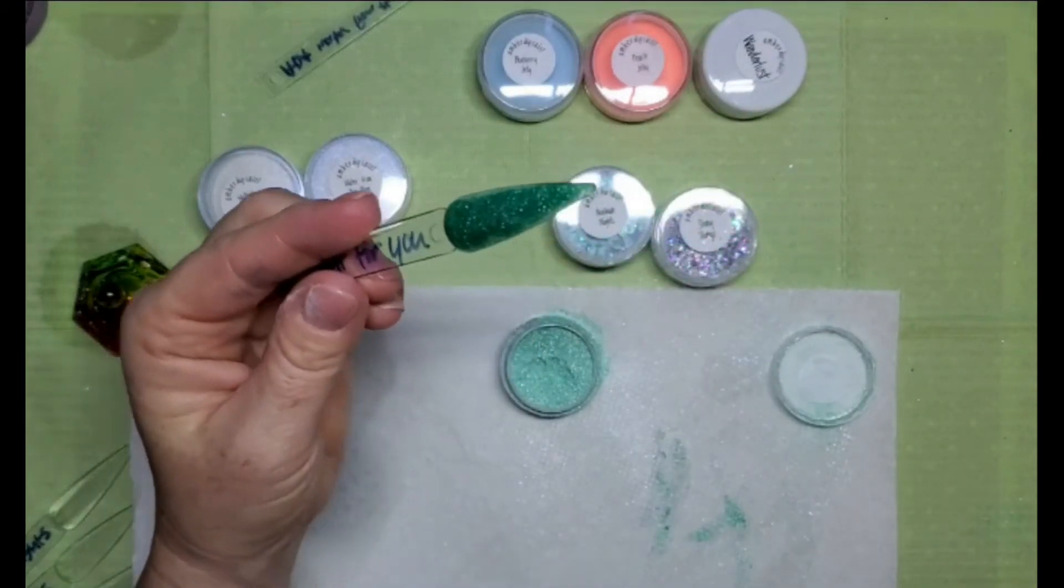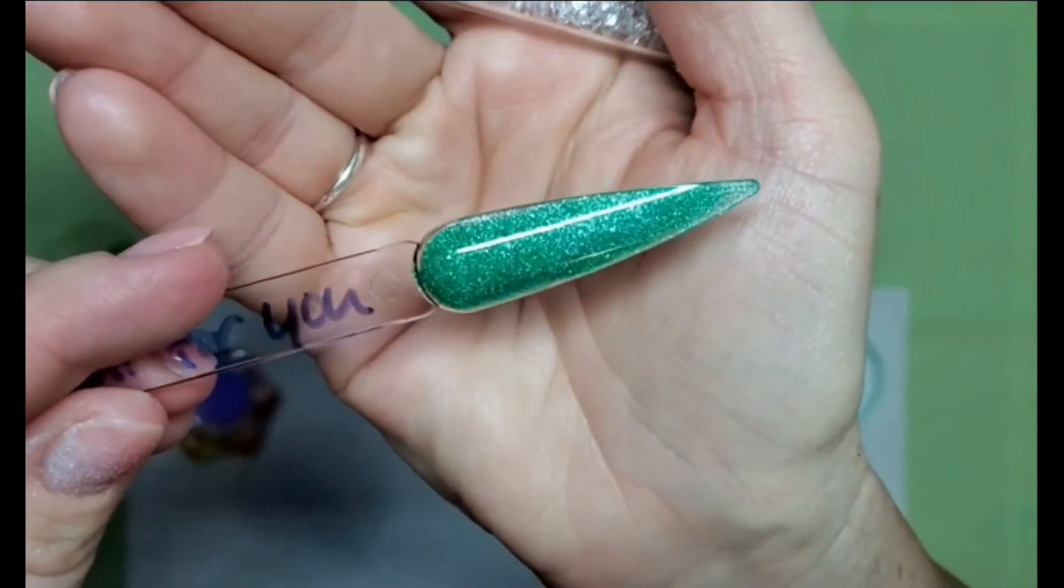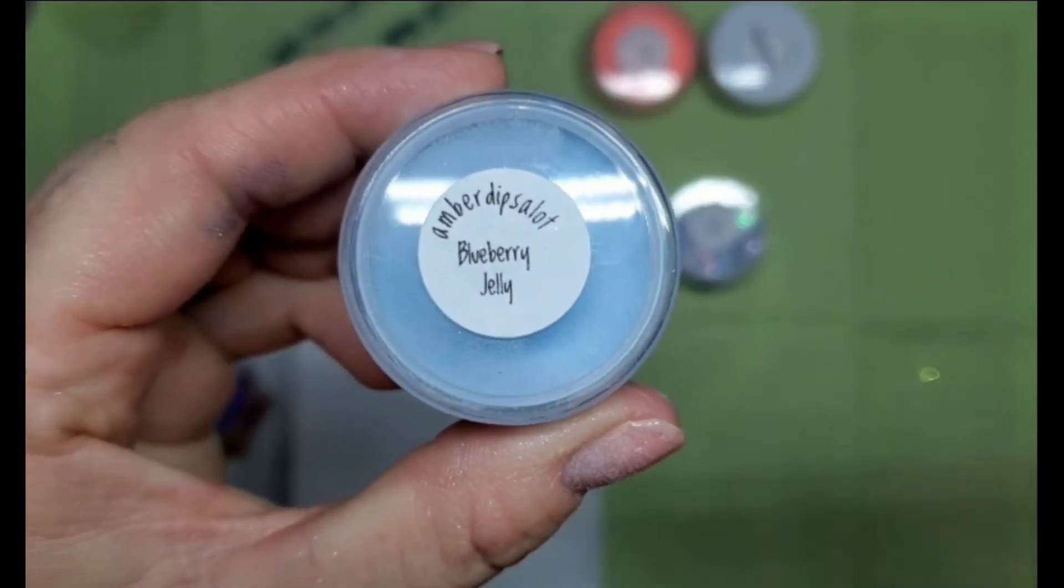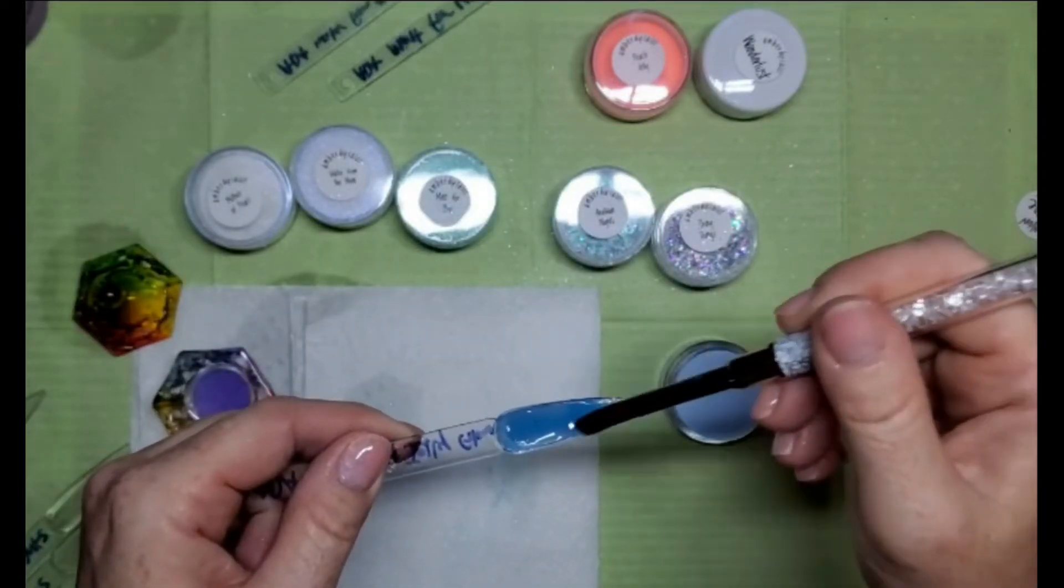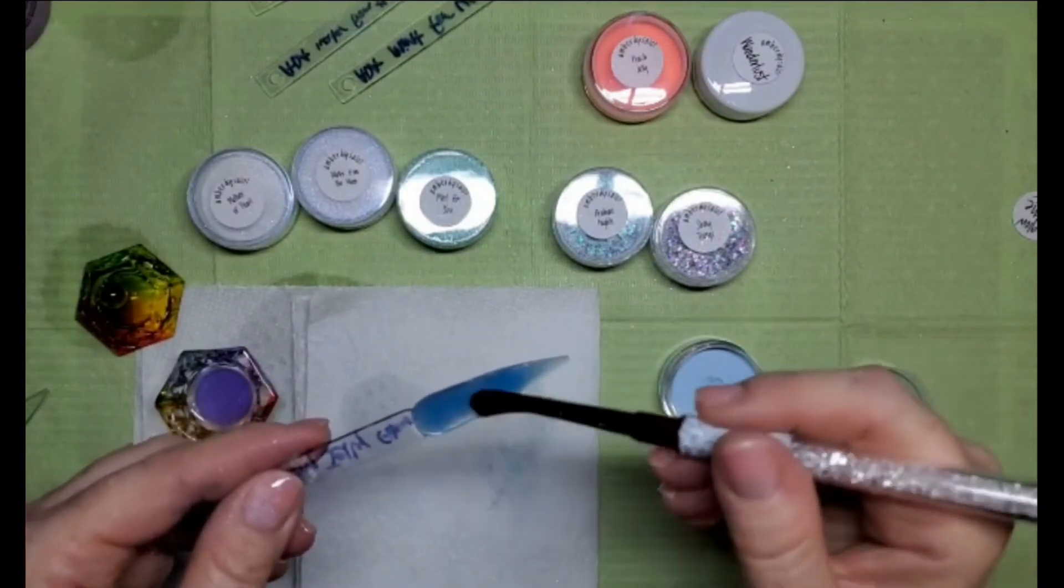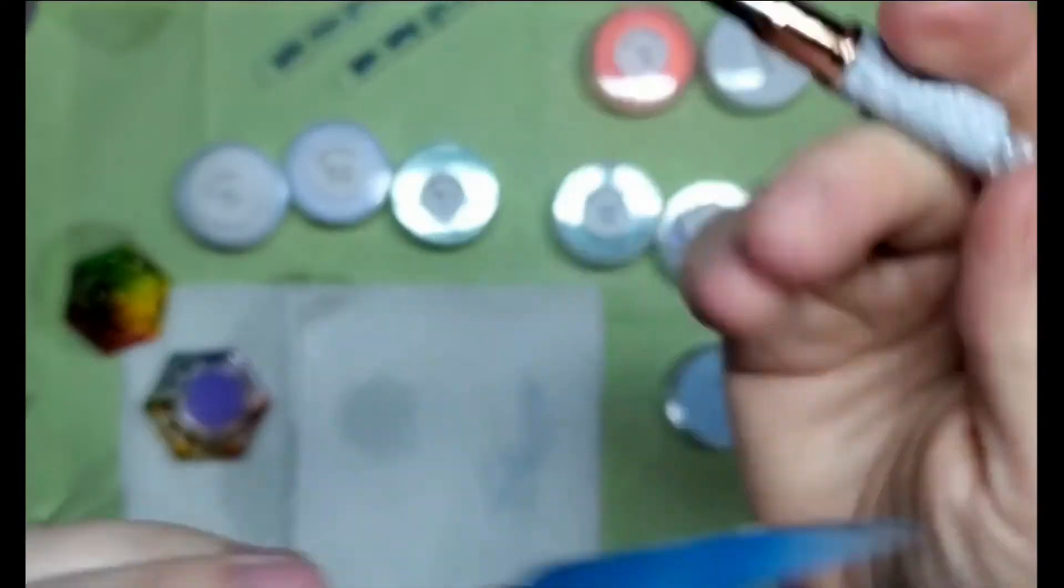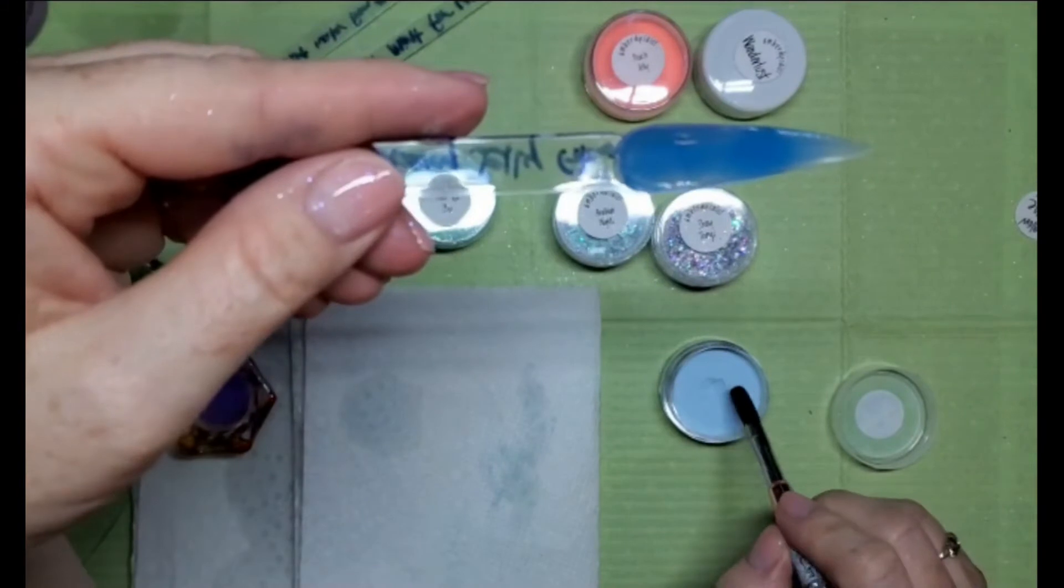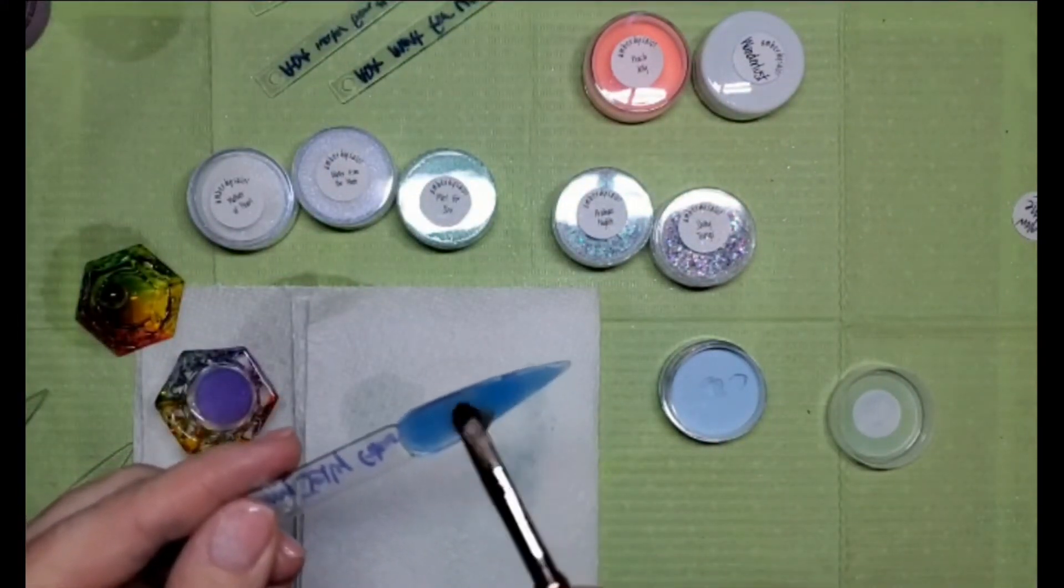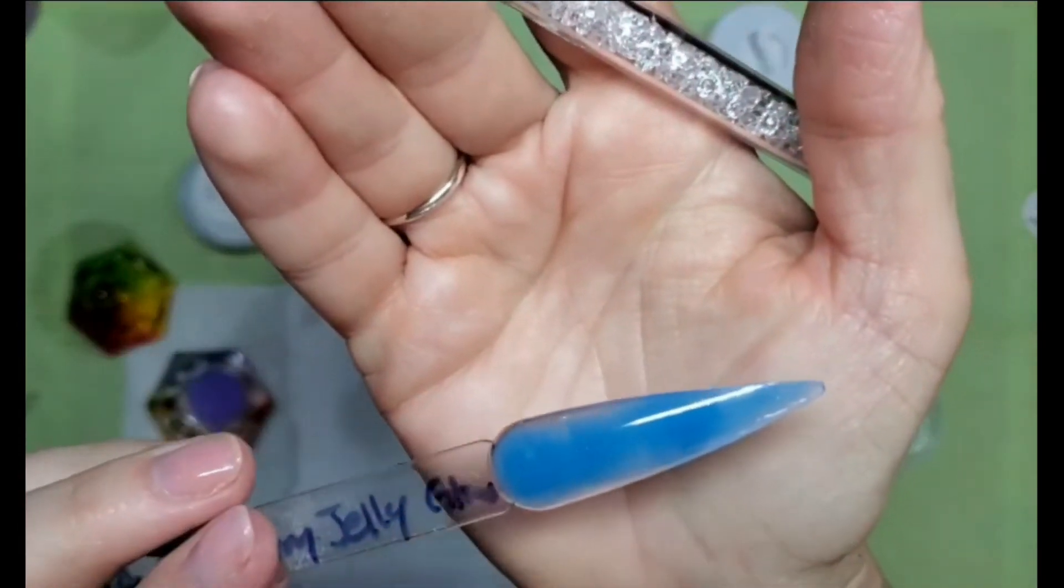This is Mint for You - really pretty mint green color. Look at that! And then Blueberry Jam, this is one of the ones that glows in the dark. That one's really pretty too.